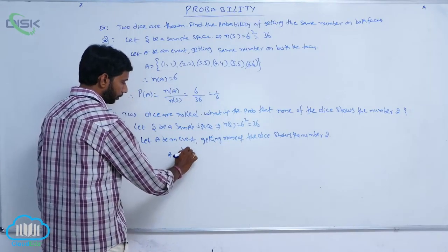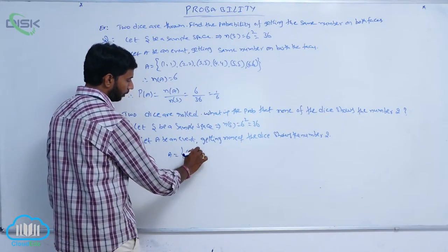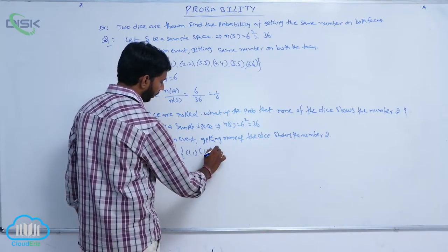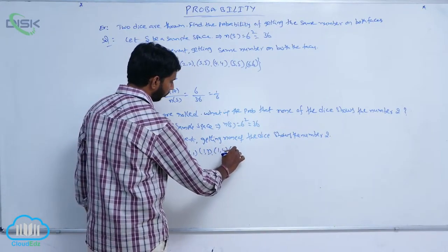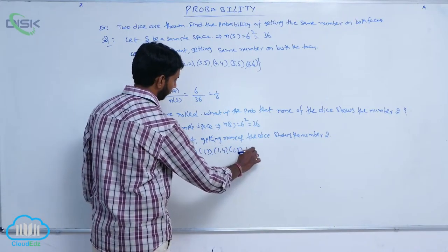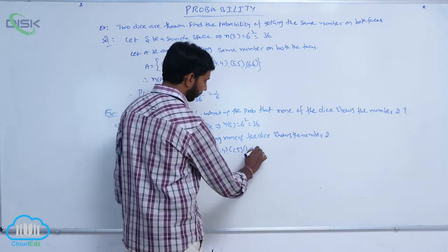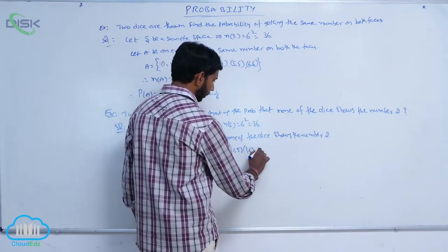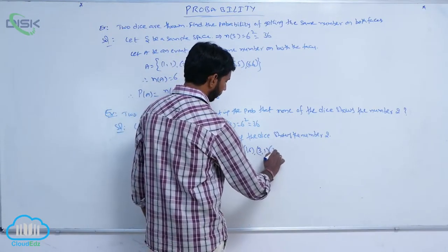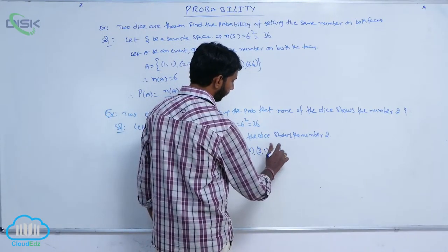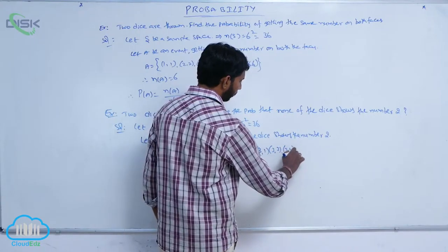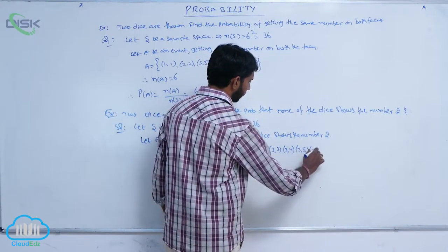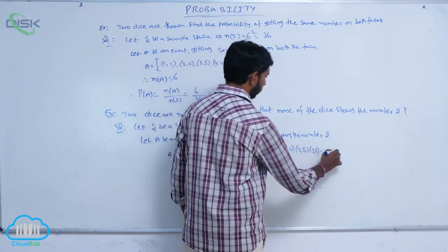Here A equals: (1,1), (1,3), (1,4), (1,5), (1,6), and (3,1), (3,3), (3,4), (3,5), (3,6), and so on.